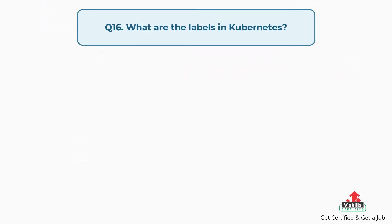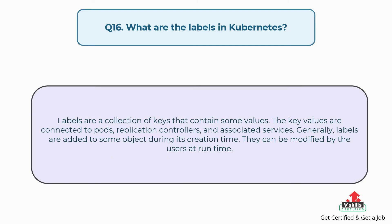Question number sixteen: What are the labels in Kubernetes? Labels are a collection of keys that contain some values. The key values are connected to pods, replication controllers, and associated services. Generally, labels are added to some object during its creation time. They can be modified by the users at runtime.